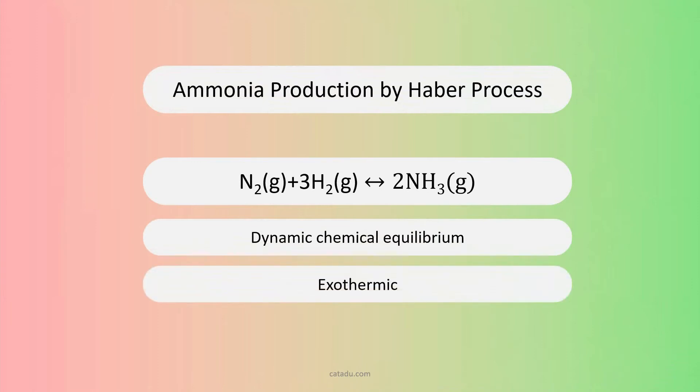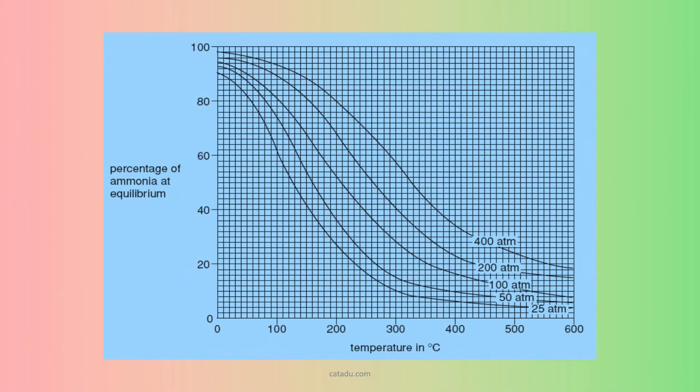This is exothermic reaction. Forward is exo, but the backward is endo. Higher temperature increases the speed of reaction, but the problem is that the product shifts to the left.